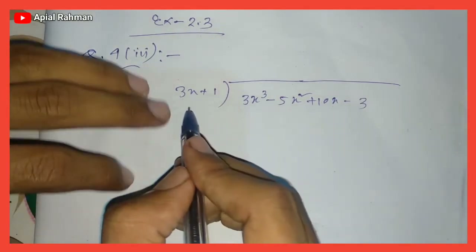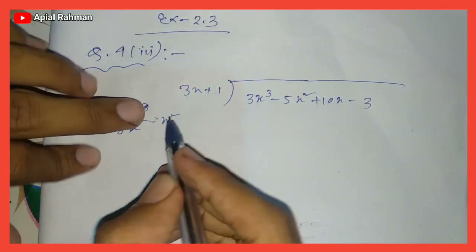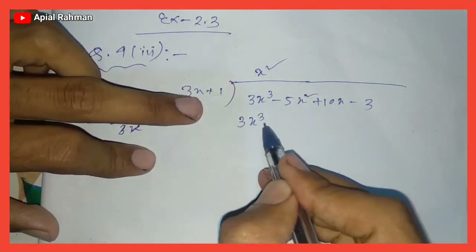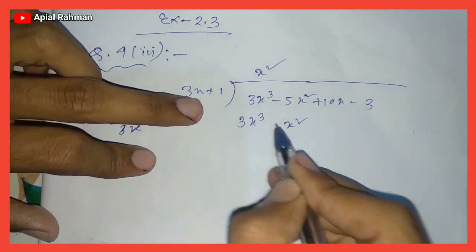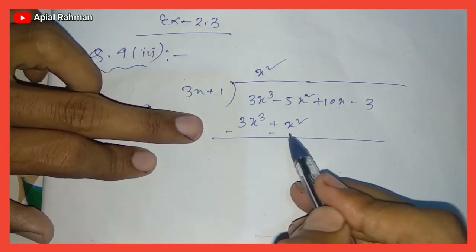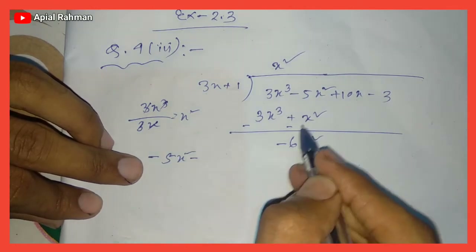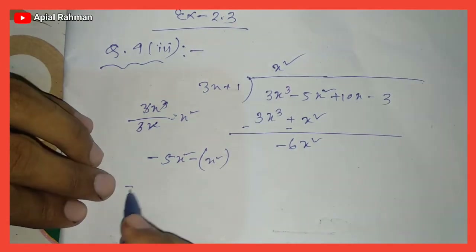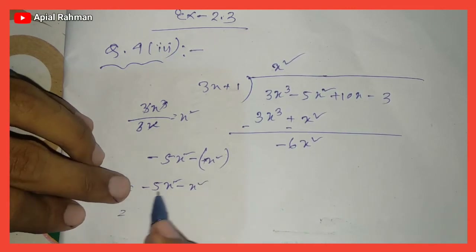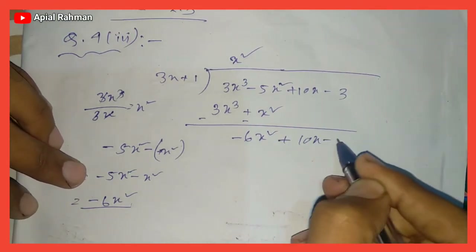3x cubed divided by 3x gives x. Then x squared terms: x squared plus x squared gives 18x squared... minus x squared minus x squared, and we contrast minus 5x squared. So minus 5x squared minus plus minus x squared, giving minus x squared plus 10x minus 3.